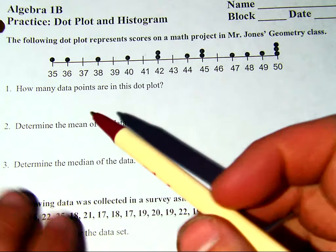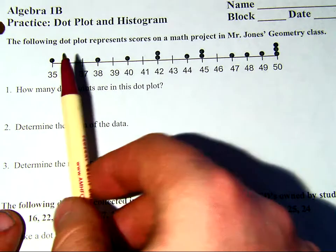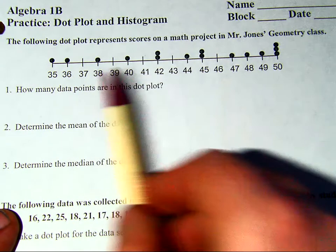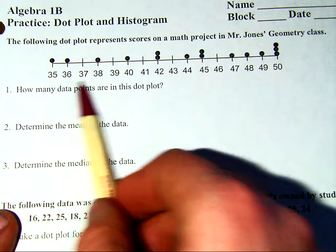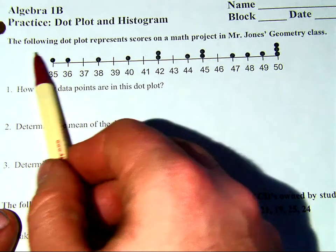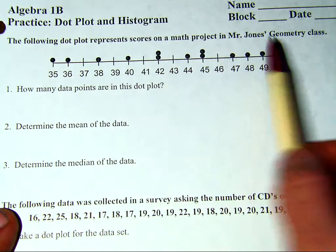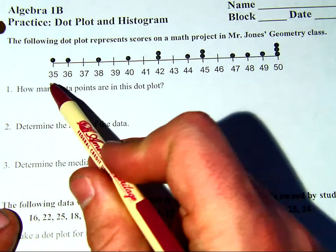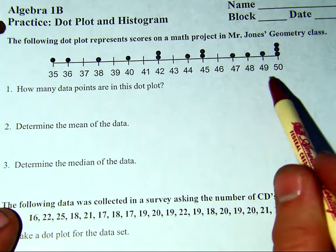So looking at this line plot, the way a line plot is structured, I have all my possible values, my range. The lowest score I can have is 35, the highest one I can have is 50. This is scores on a math project, hypothetical of course. So the lowest score possible is 35, the highest score possible is 50.